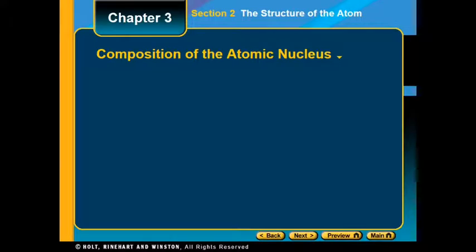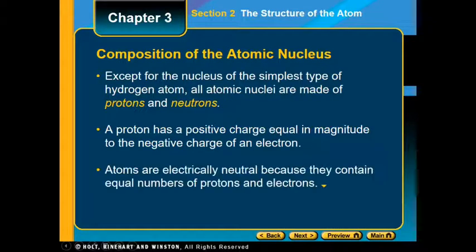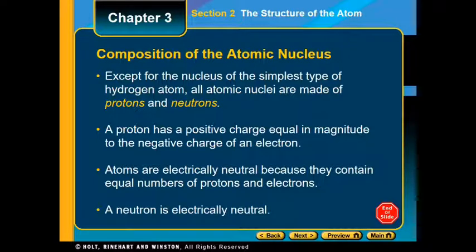Let's look at the composition of the nucleus. It says, except for the nucleus of the smallest type which is a hydrogen atom only having just one proton, all atomic nuclei are made of protons and neutrons. We've already talked about protons and neutrons. Protons have a positive charge, equal in magnitude to the electron but opposite charged. Atoms are going to be electrically neutral because they have an equal number of protons and electrons.